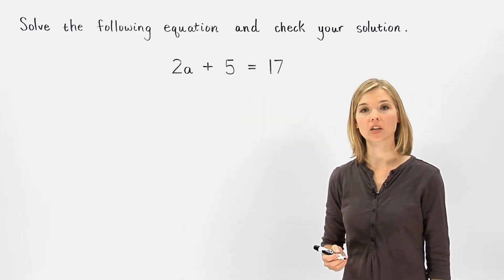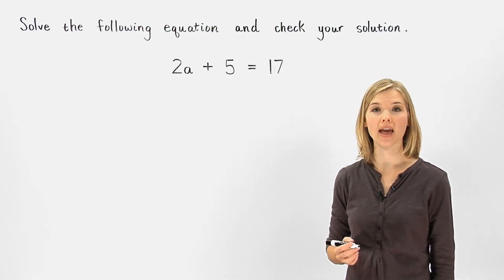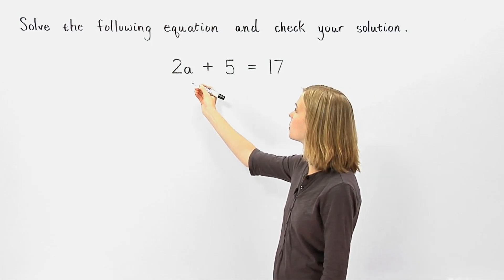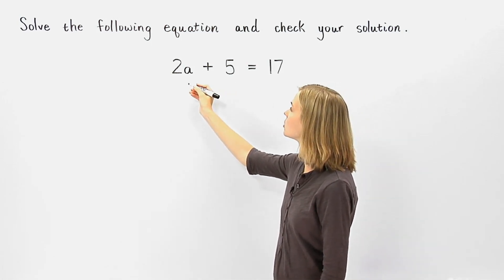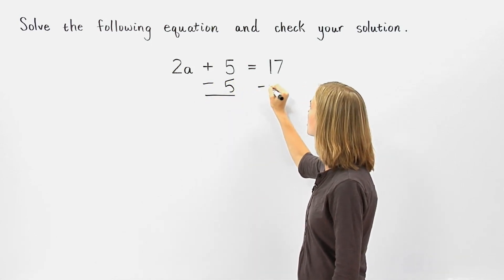To solve this equation for a, we must first isolate the term containing a, which in this case is 2a. Since 5 is being added to 2a, we need to subtract 5 from both sides of the equation.